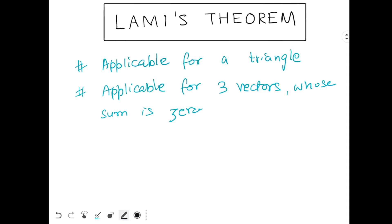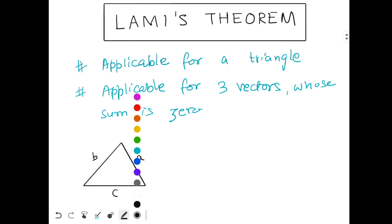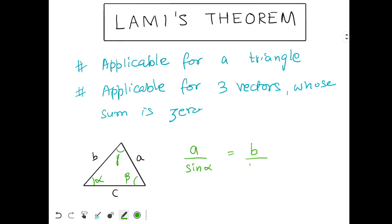Let's see how to apply Lamy's theorem for a triangle first. If I take a random triangle whose sides are a, b, and c, and the angle opposite to side a is alpha, angle opposite to side b is beta, and angle opposite to side c is gamma, then I can say that a/sin α = b/sin β = c/sin γ. This is how you use Lamy's theorem in a triangle.